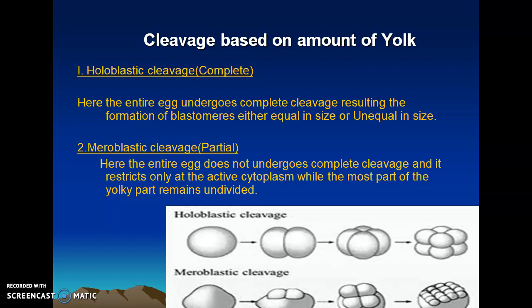Based upon the amount of yolk, the cleavage can be classified into two different types: complete cleavage and partial or incomplete cleavage. The complete cleavage is called holoblastic cleavage. In holoblastic cleavage the entire egg undergoes complete cleavage, resulting in the formation of blastomeres which are either equal in size or unequal in size.